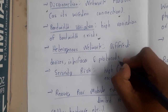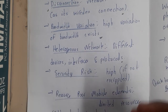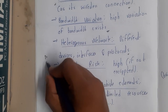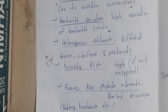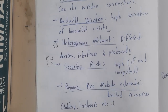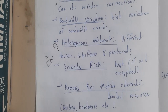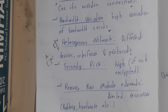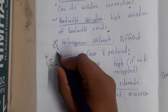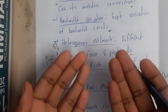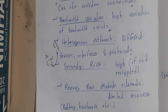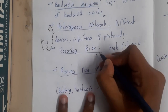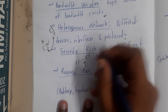Another challenge is heterogeneous networks. The mobile architecture is not the same for all devices — for example, an Apple iPhone has a different communication architecture compared to a Samsung or other device. The interfaces and protocols used may also vary. If two devices are using different frequencies, they need a common frequency to communicate. Bringing different devices to a compatible state is a challenge in heterogeneous networks.